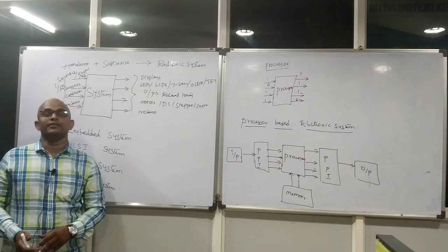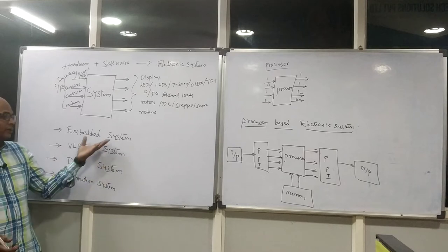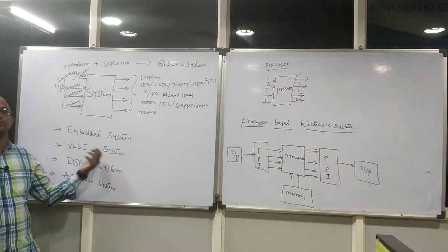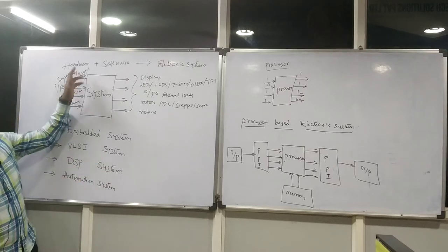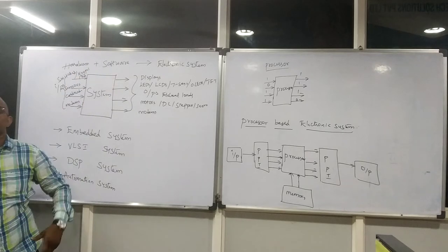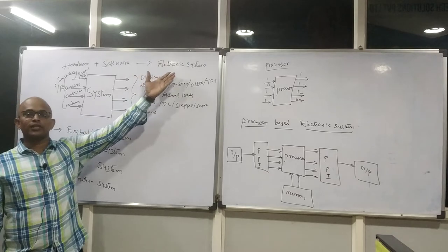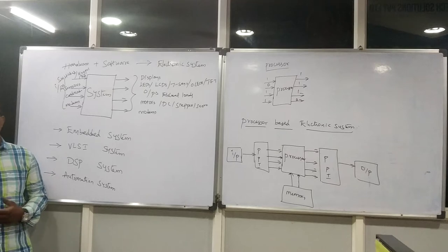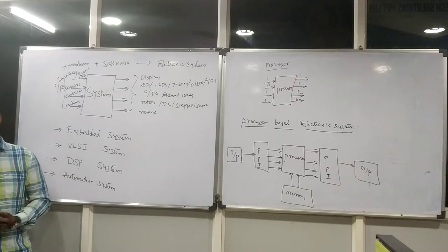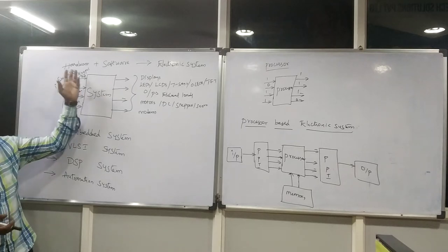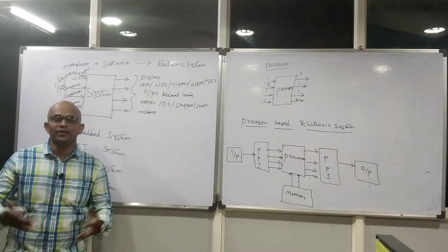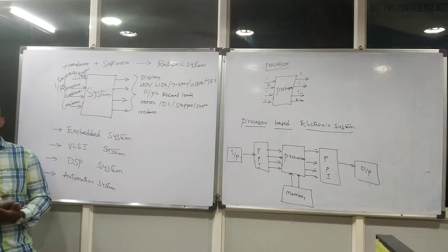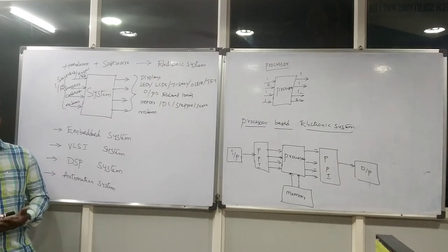Based on category, they are segregated into different systems. You are finding the names in core domains: embedded system, VLSI system, DSP system, and automation system. As per this simple equation hardware and software — you say it is an electronic system. But the system comes under which domain — embedded, VLSI, DSP, or automation — is purely decided by the hardware. You will find common components like resistors and capacitors for every product, but other than this you need to notice there is one intelligent device that will decide your domain.